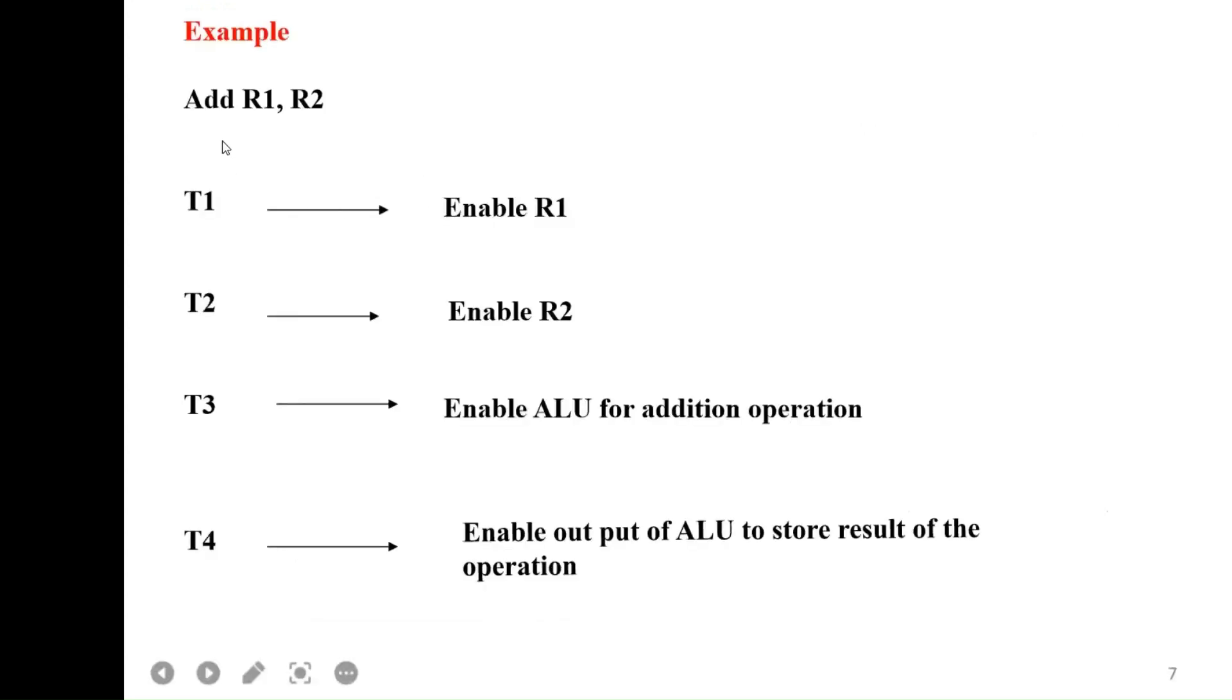Suppose I want to add the data stored in these two registers. First, I enable the data R1, next I enable the data stored in R2, then T cycle 3 represents the addition operation. Whatever output the ALU has performed has to be stored in a particular place. So when we give 3 plus 2, it gives 5. These are the various instructions a computer will do - it has to read the data, add it, and store it.